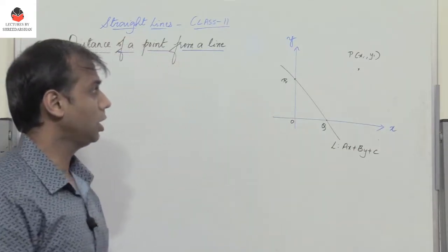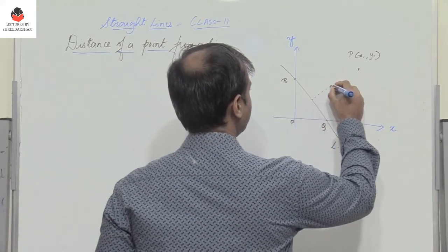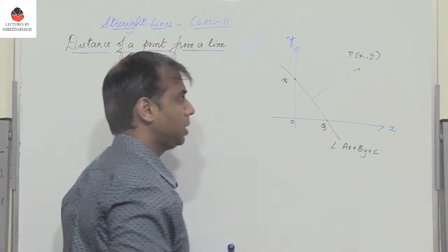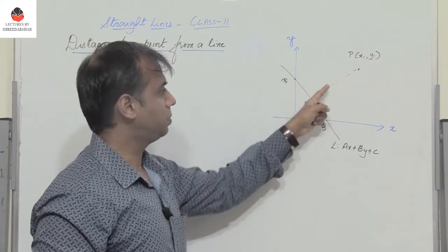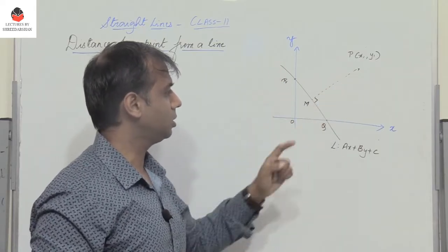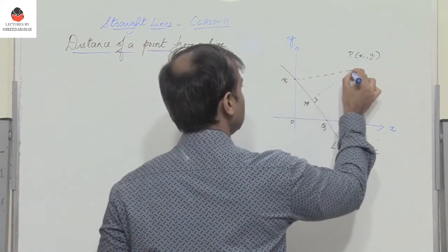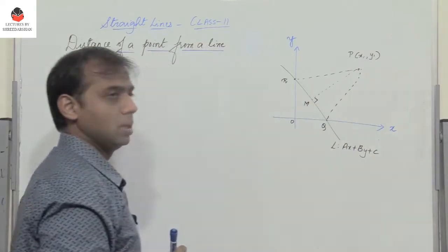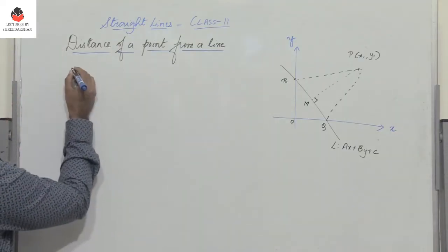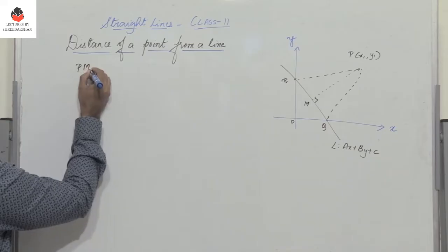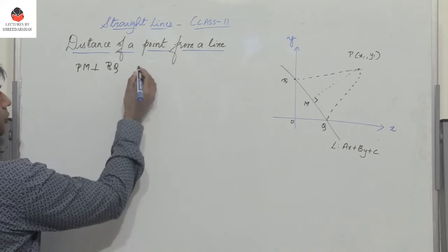To find the distance of point P from line L, draw a perpendicular from point P to the line L, and let this foot of perpendicular be M. So PM is perpendicular to line L. Then join PR and PQ, giving us triangle PQR, with PM perpendicular to RQ.